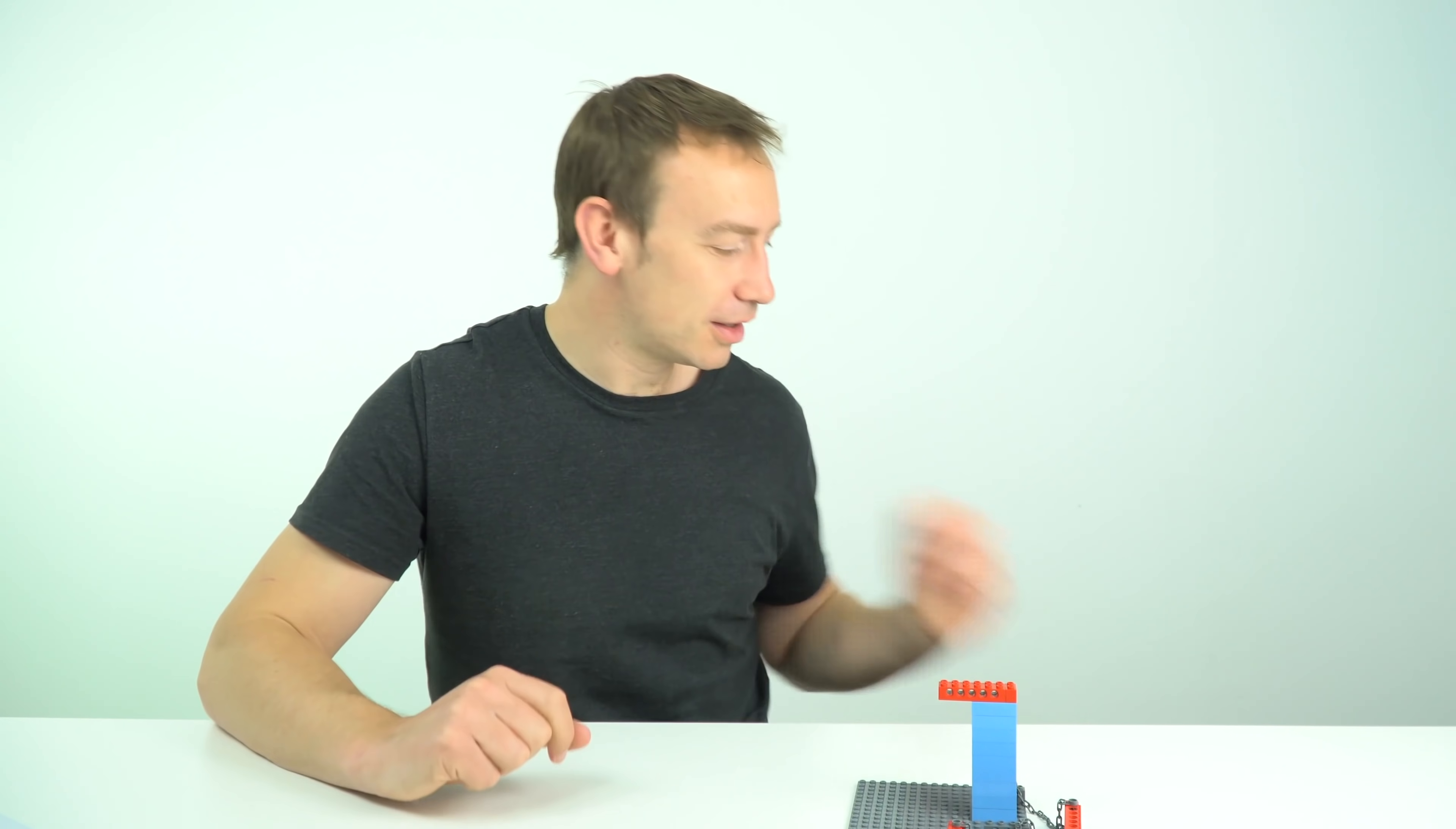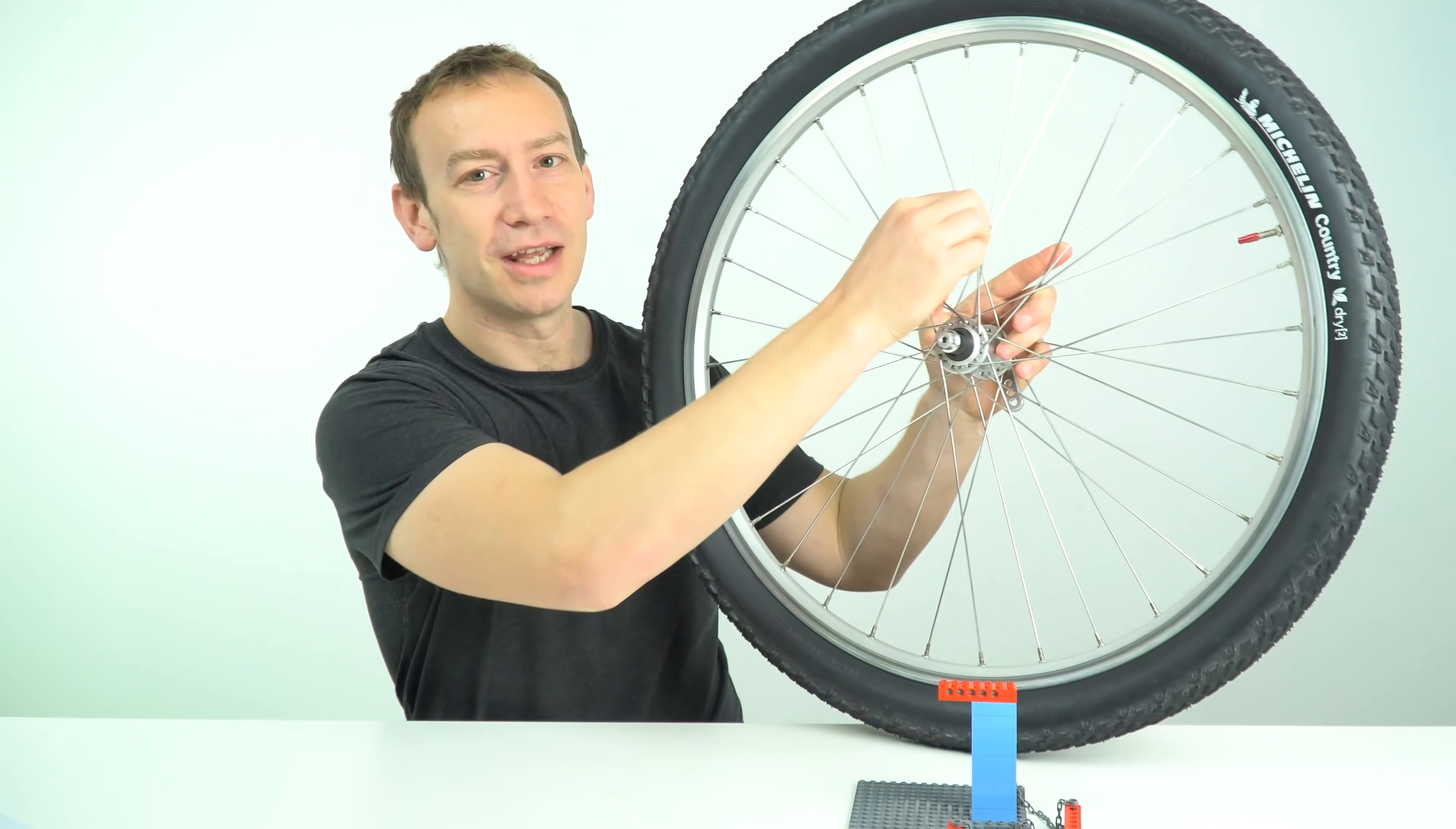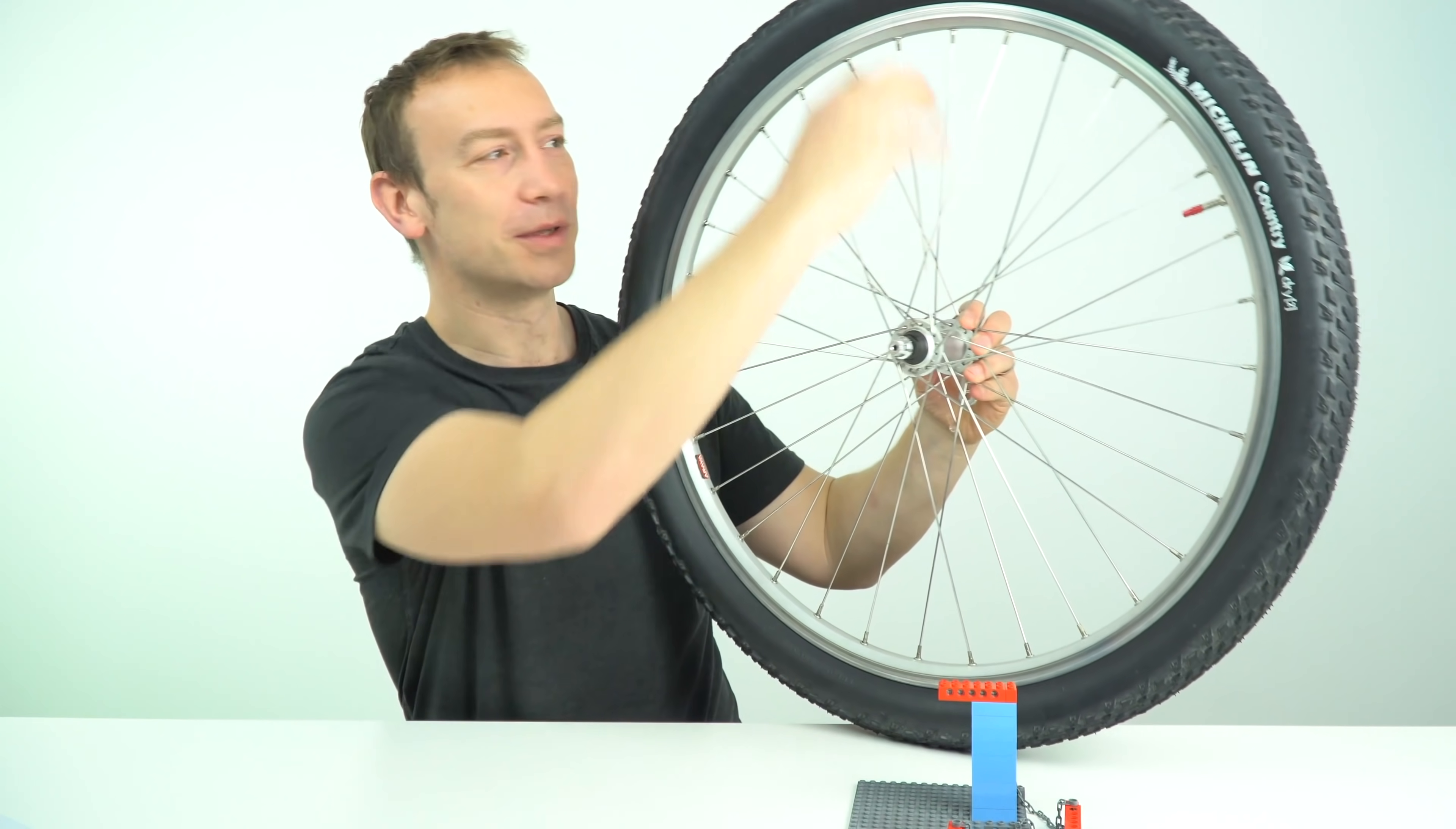Now this happens all the time in architecture but it also happens with other everyday items including bicycles. The reason that your bicycle is held up is because of the tension in the spokes, and actually the weight of that bike is basically being hung from the top of the rims on the wheels. So your bike is hanging from the top of the wheel.